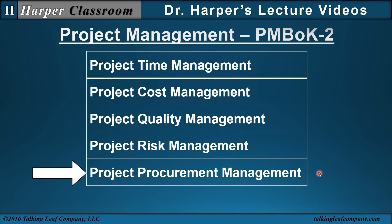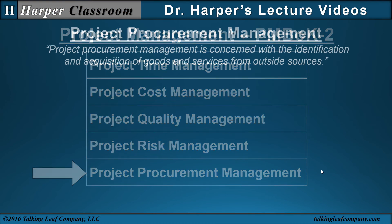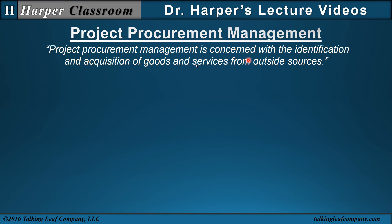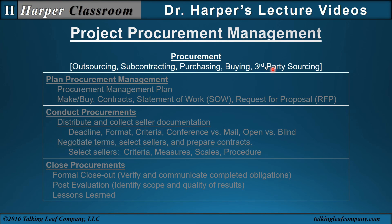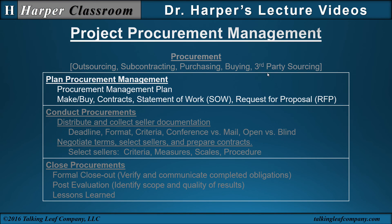Next is project procurement management — concerned with the identification and acquisition of goods and services from outside sources. There are four major processes. We first discuss procurement and different terms: outsourcing, subcontracting, purchasing, buying, and third-party sourcing. The first process is planned procurement management. The procurement management plan could contain a make-buy analysis, consider different kinds of contracts containing a statement of work or request for proposal, and the mechanics of how to solicit the work to be done.